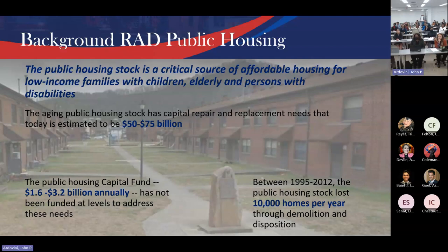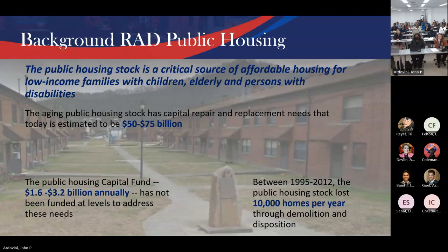Another challenge public housing was facing: between 1995 and 2012, through something called demolition and disposition authority — Section 18 — housing authorities could demolish public housing or sell it. Through those 17 years, we were losing 10,000 units a year, and they were not being replaced. Do the math: 10,000 units, conservative estimate three per household, 17 years — half a million people without homes.